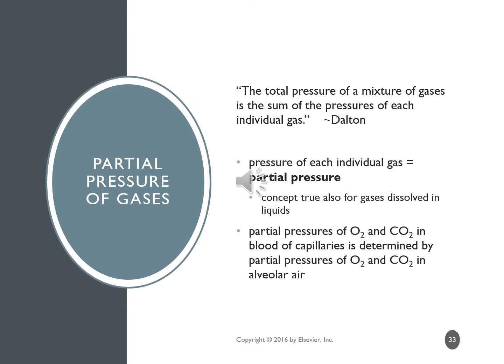Partial pressure refers to dissolved oxygen and dissolved CO2 content in the blood. The theory is that the pressure of a mixture of gases is the sum of the pressures of each individual gas. In the blood of capillaries, this is determined by the partial pressures of O2 and CO2 in the air — relating the gases in the alveolar sacs to those dissolved in the blood capillary.